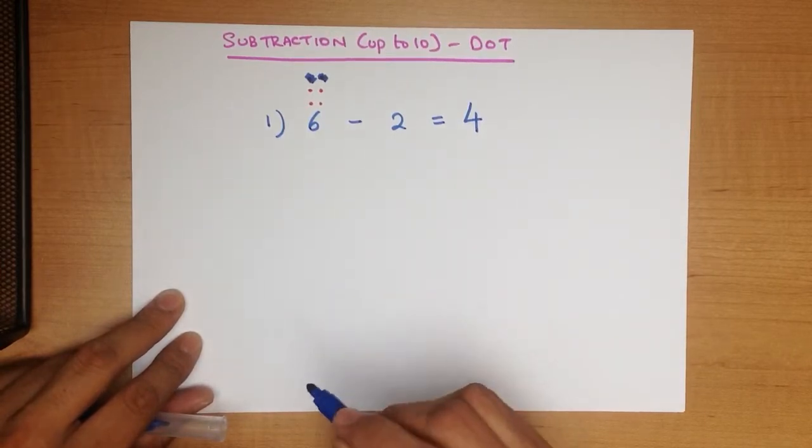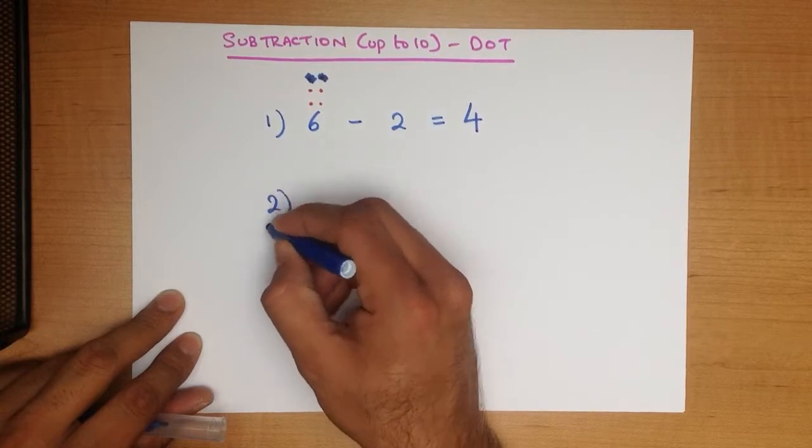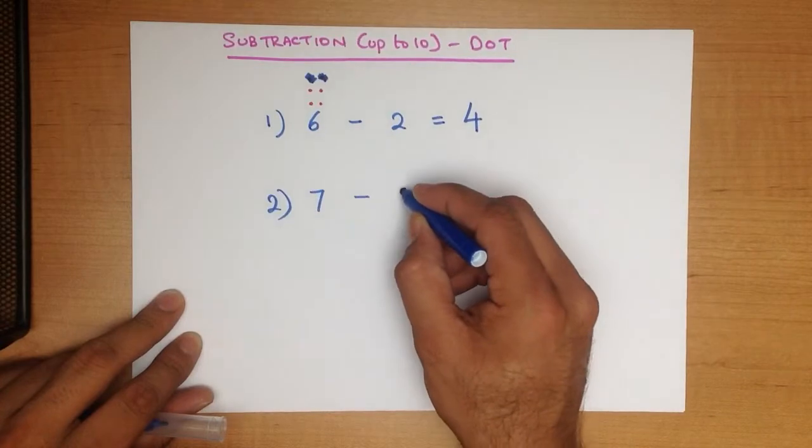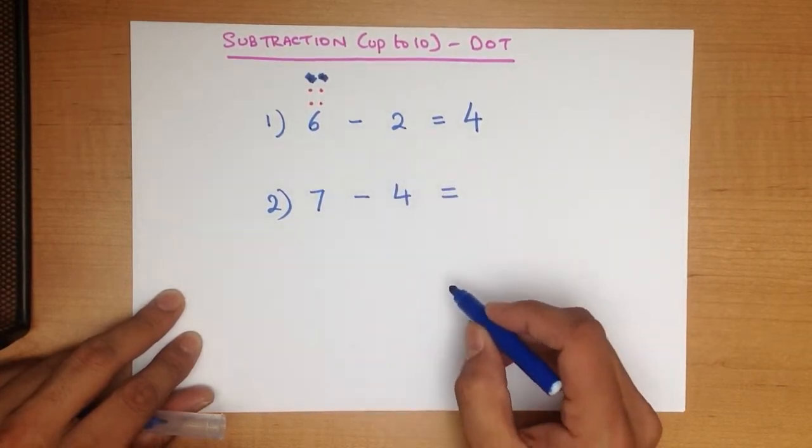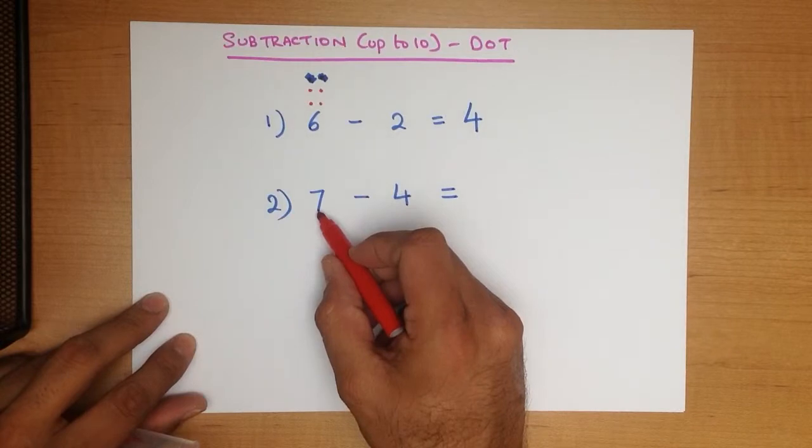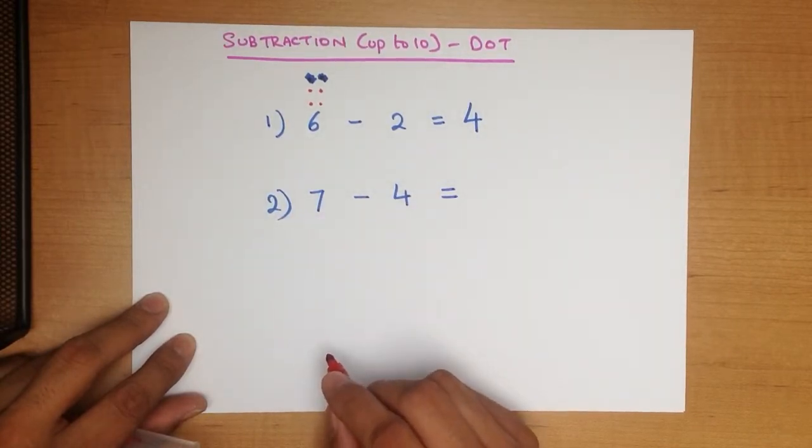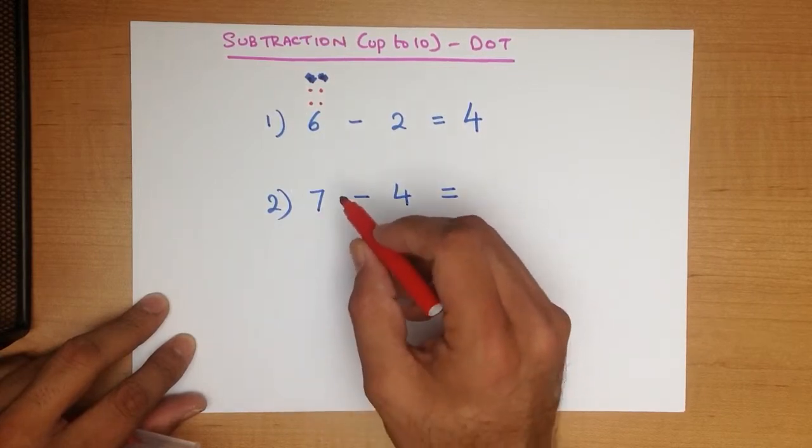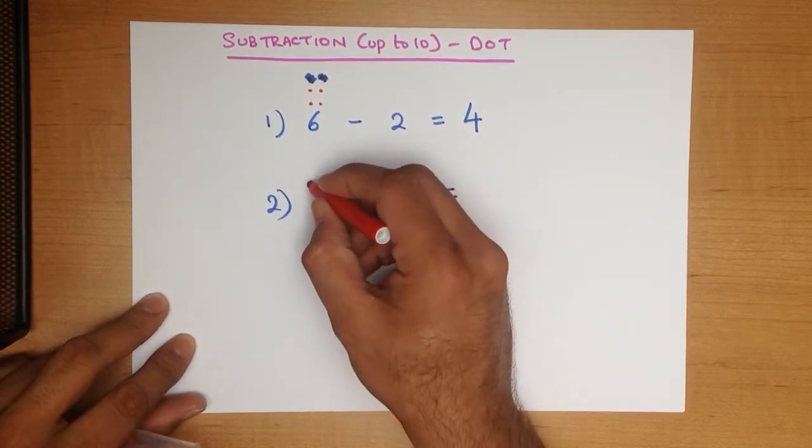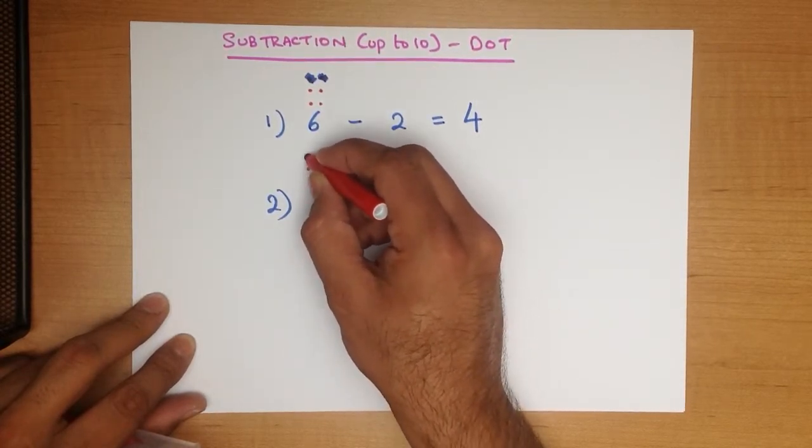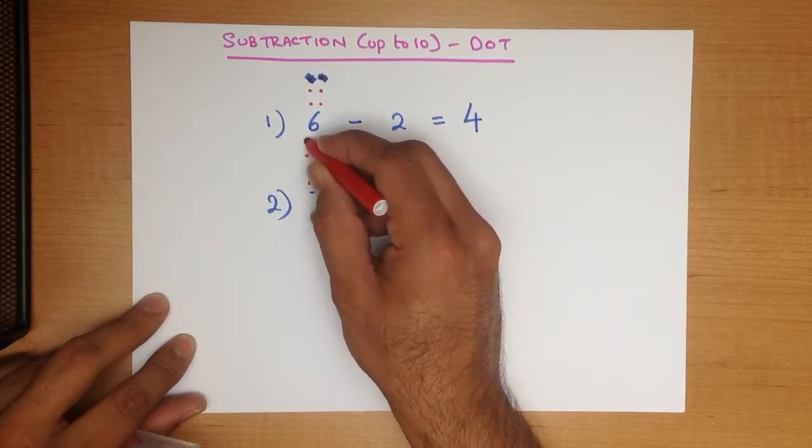Now let's look at another example. What is 7 minus 4? Again, what we do here is, above the first number, we are going to put dots that represent this number. The number is 7, we put 7 dots above the number 7. 1, 2, 3, 4, 5, 6, 7.